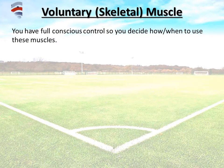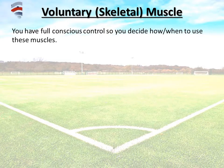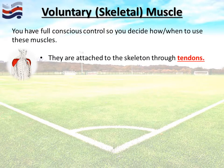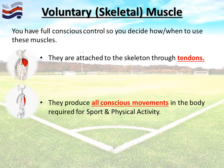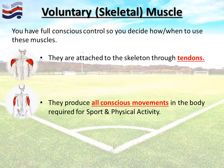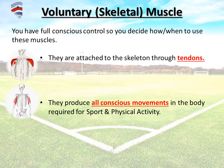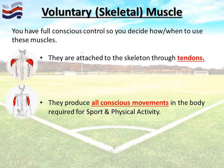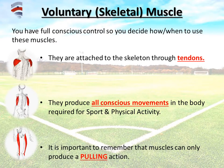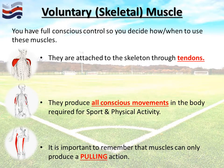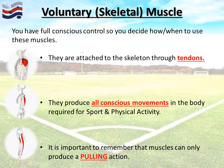Voluntary muscle, also known as skeletal muscle, is what we'll focus most attention on. This is the muscle you have full conscious control over — you decide how and when to use these muscles. Tendons are the fibrous material that attaches muscle to bone. They produce all conscious movement, from day-to-day things like brushing your teeth up to more advanced movements required for sport. Importantly, muscles can only pull — they never push. That's very important to remember.